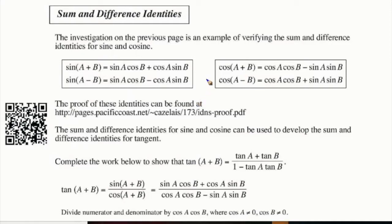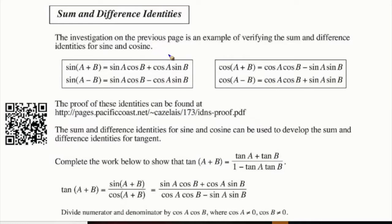The investigation we just went through is an example of verifying the sum and difference identities for sine and cosine. We used specific angles to see that this pattern did work and verified that the left side equals the right side. So it suggests that it's true, but it doesn't prove that it's true. The proof of these identities can be found here, but these are the sum and difference identities for sine and cosine.